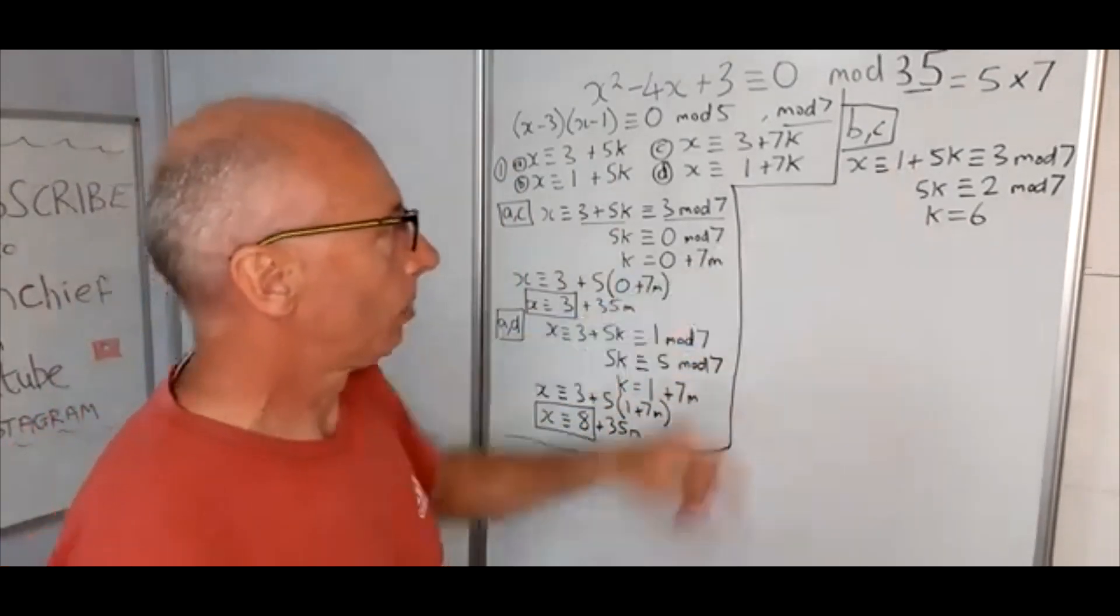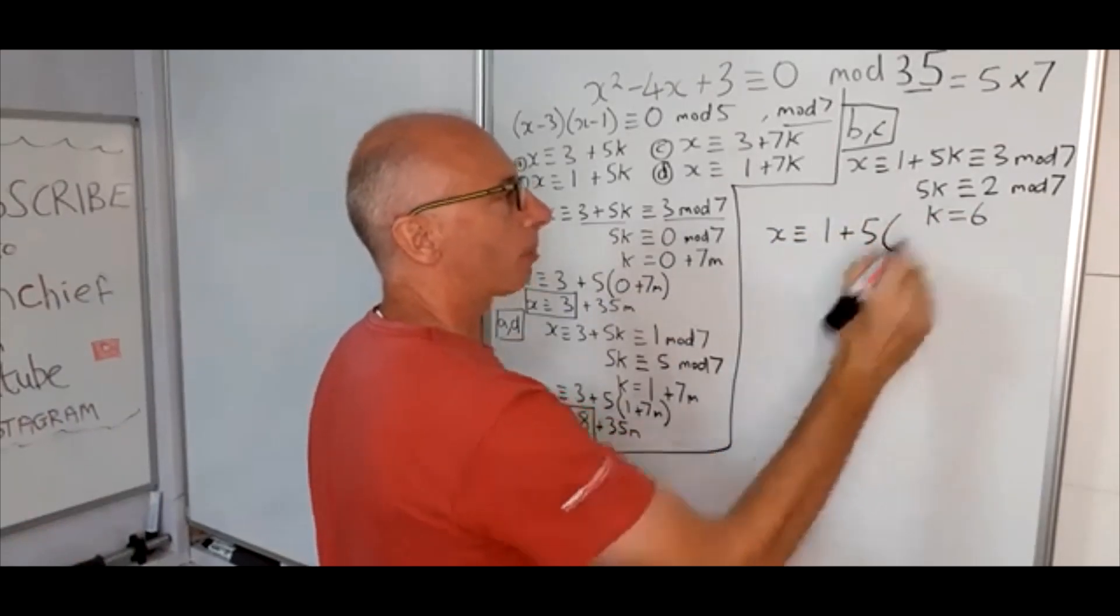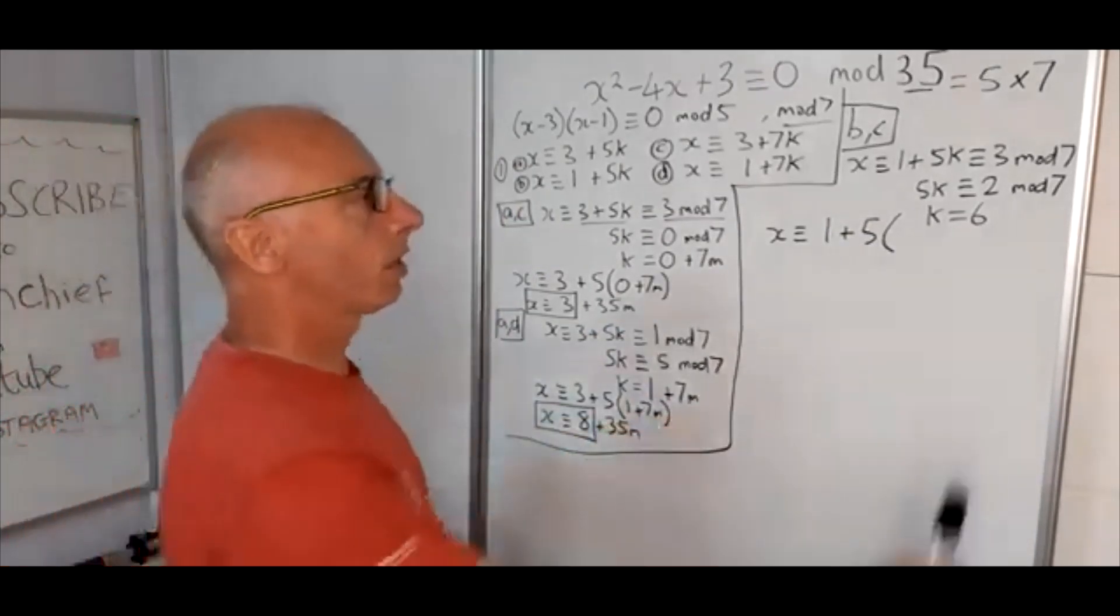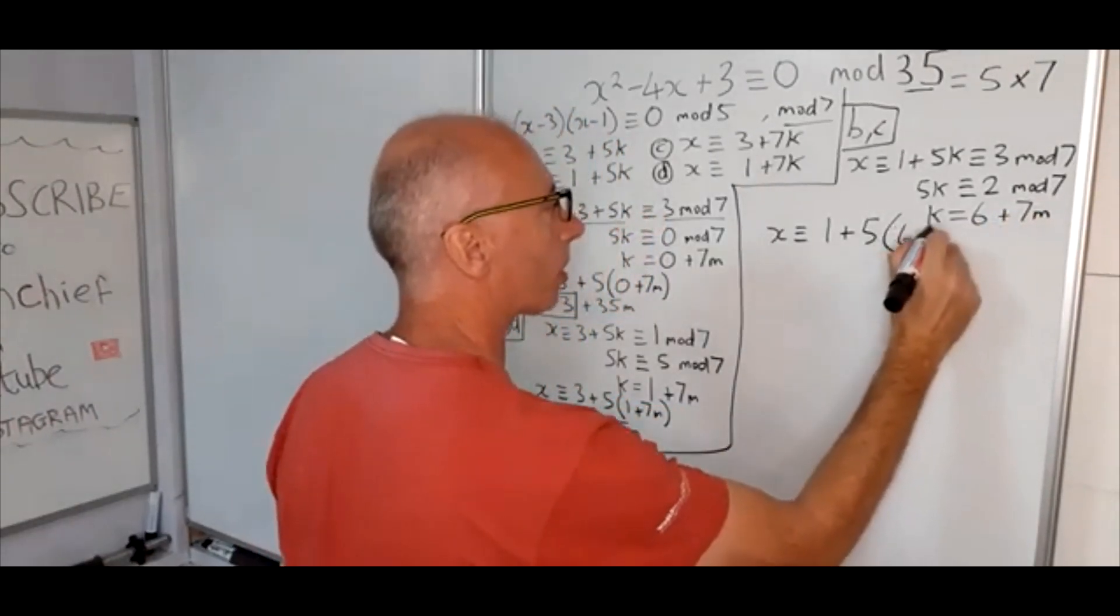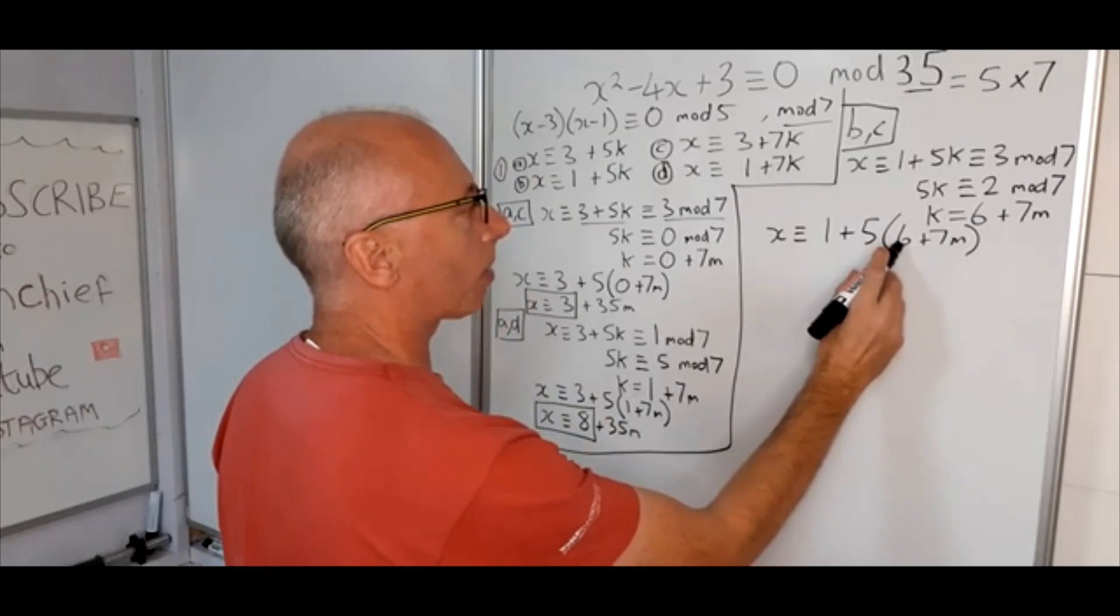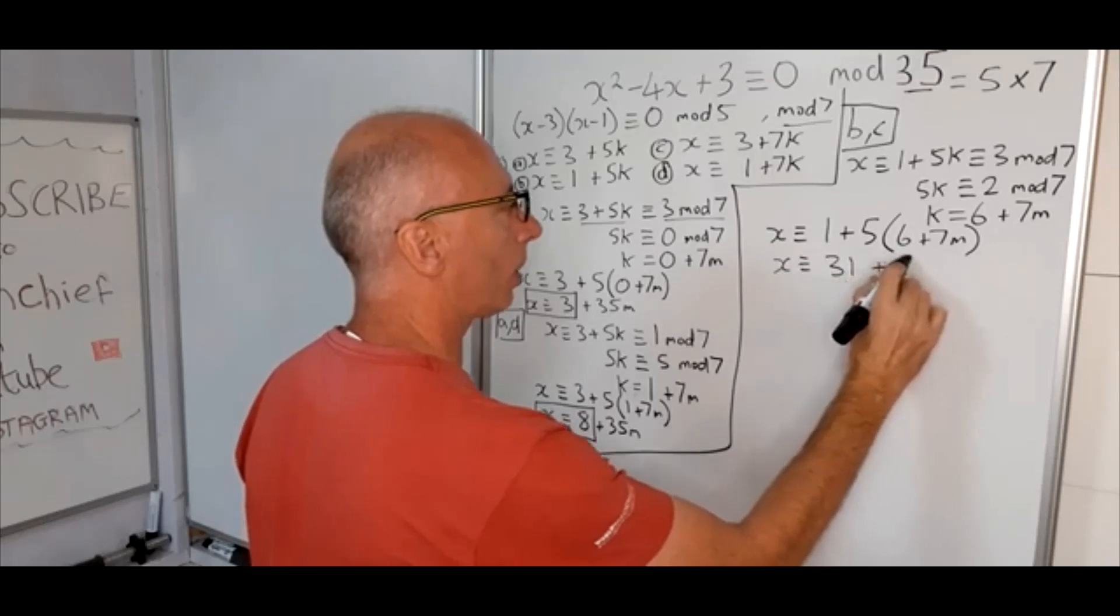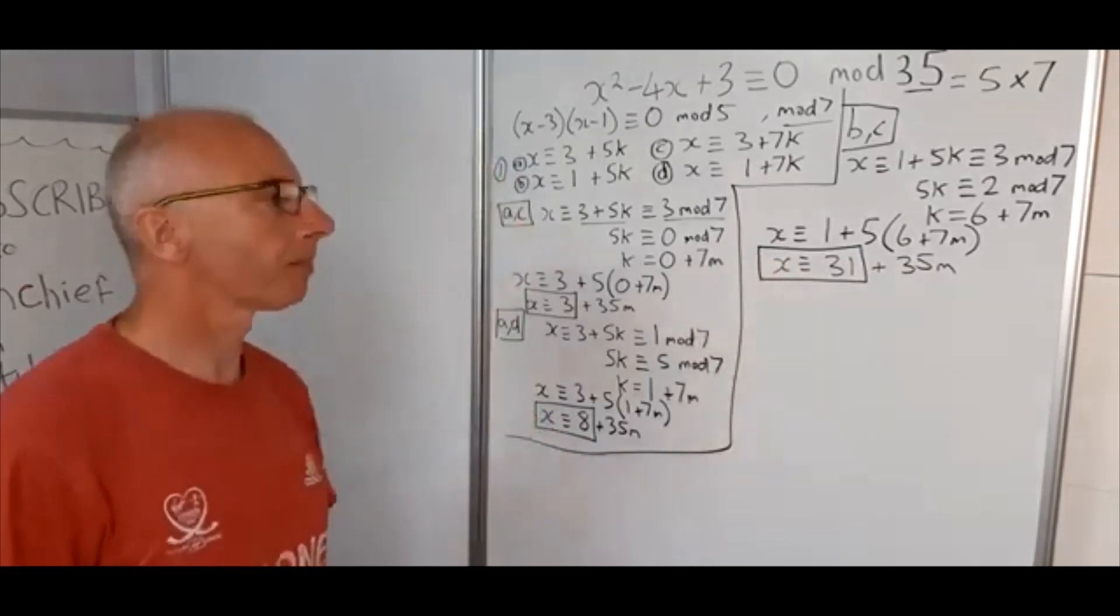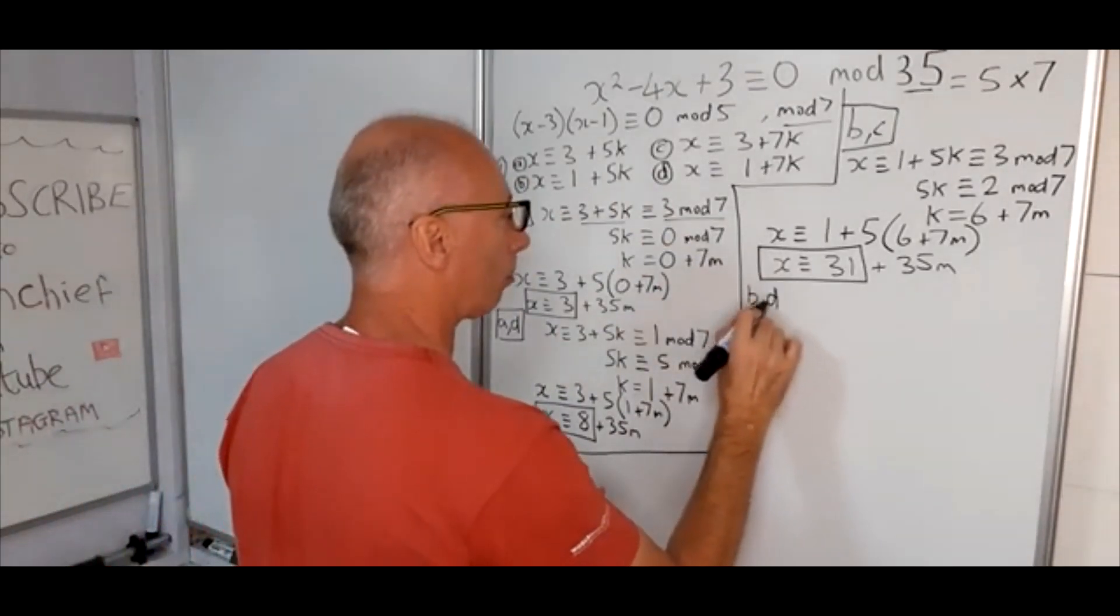Okay, so now we go back to the original equation. So now x is congruent with 1 plus 5 times k. Now here k, we need to do this mod 7, so this is going to be plus 7m, so 5 times 6 plus 7m. So just working these out, 1 plus 5 times 6, 5 times 6 is 30, so therefore x is congruent to 31 plus 35m, so that's the bit there that we're interested in.